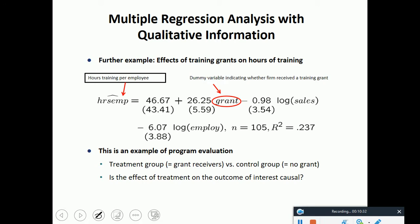This is another example: effects of training grants on hours of training. If you see, it's a positive coefficient affecting the hours of training per employee. There is a treatment group which got the grant and a control group which did not get the grant. We can see that the person who receives the grant has higher hours of training per employee. Because if you get a grant, then maybe you will get a chance to get more training.